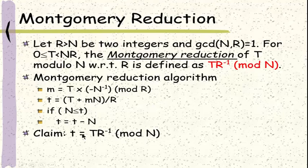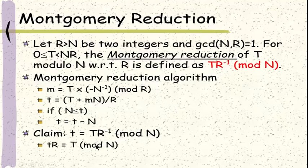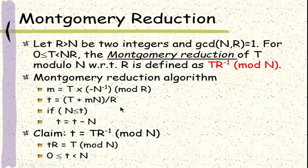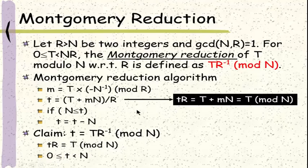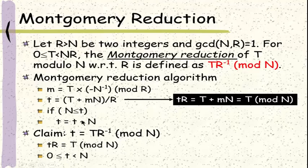Now let's prove this result — t is indeed the Montgomery reduction. To prove this, we have to show two things. First, t times r must equal capital T mod n. And second, t must be between 0 and n. To see the first equation, we start with the definition of t and multiply both sides by capital R. This gives us t times r equal to capital T plus m times n. When we do a mod n operation, the second term disappears, so the only thing left is t as required. If t is obtained by subtracting n from the original t, this equation still holds because it is under the mod n operation, so subtracting or adding n doesn't change anything.